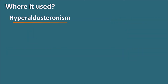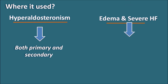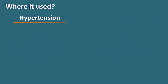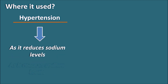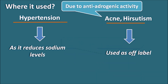Spironolactone is used clinically in hyperaldosteronism — both primary and secondary — as it is a competitive aldosterone antagonist. It is used in edema and severe heart failure by reducing body volume through increased sodium excretion. It is also used in hypertension when other antihypertensive drugs fail to control blood pressure. As an off-label use, it treats acne and hirsutism in women due to its anti-androgenic activity.